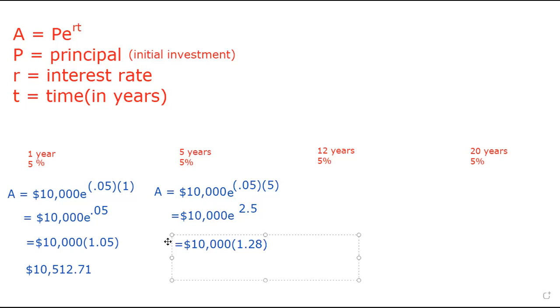And depending on how we round it and things like that, that's going to be $12,840.25. So we see we've gained almost $3,000 here.